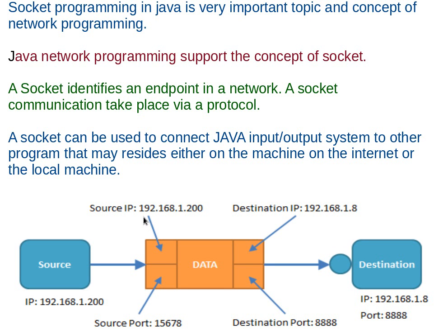Let's take an example from this diagram. Suppose the source, which is our computer, has the IP address 192.168.1.200, and we want to send data to a destination with IP address 192.168.1.8. The source port is 15678, which acts as a tunnel to transfer data to the destination on port 888. So a socket helps us to communicate and transfer data from source to destination.